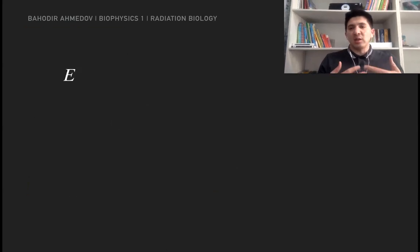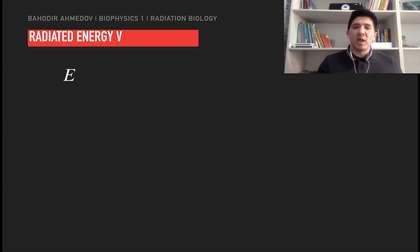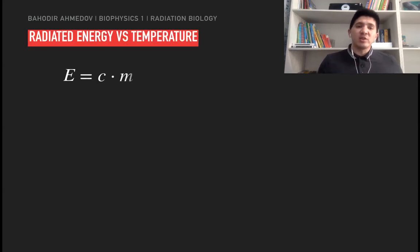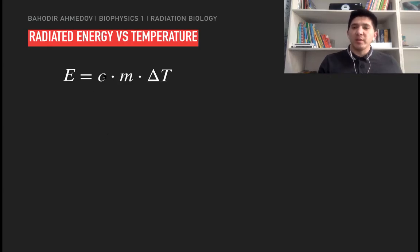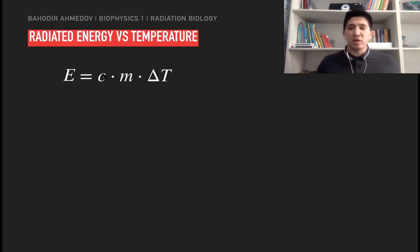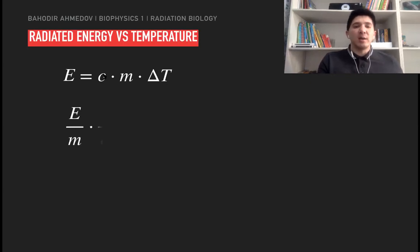There is a connection between the energy deposited and the radiation. There is a formula which enables us to calculate this quantitatively. The energy is equal to C times M times delta T, where C is the specific heat parameter of the material, M is the mass of the material, and delta T is the change of temperature. If we would like to know how much the temperature changes when we apply a certain amount of radiation to the human body, we can find delta T from this formula.